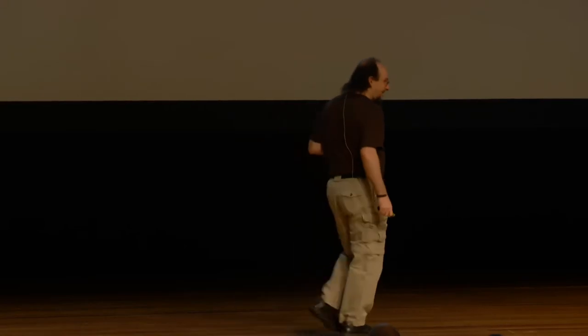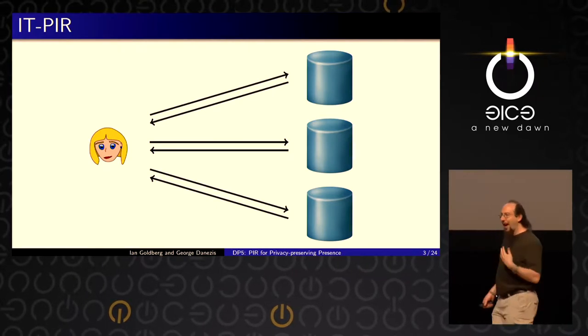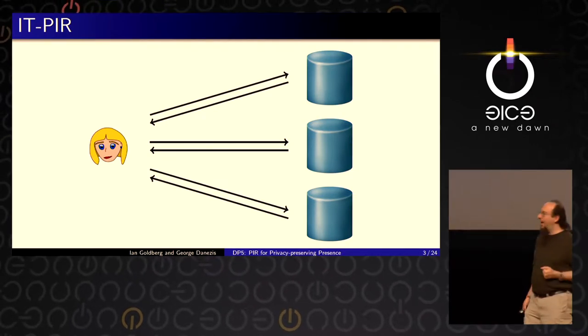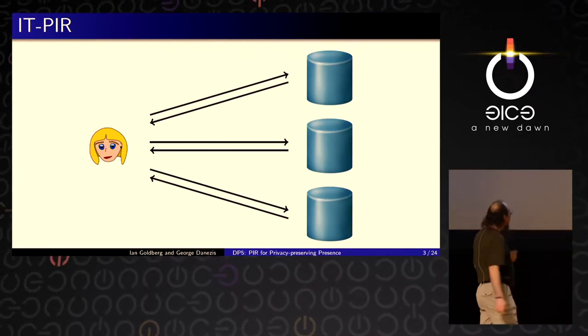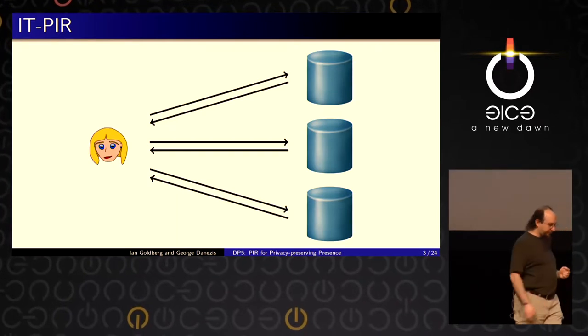Bei Tor: wenn alle Server in deinem Pfad gegen dich zusammenarbeiten, bist du auch ruiniert. Bestimmte Arten von E-Voting haben auch diese Annahmen. Alice kombiniert die Antworten — meistens wird ein bisschen rechnerischer Schutz und informationstheoretischer Schutz zusammengenommen. IT-PIR ist 70 bis 100 Mal schneller als computational PIR. Der Handel ist, dass man mehrere Server braucht.